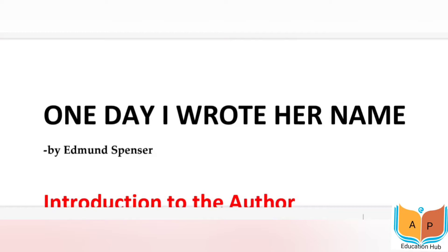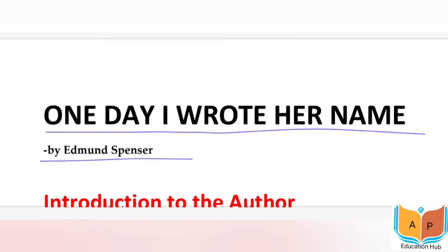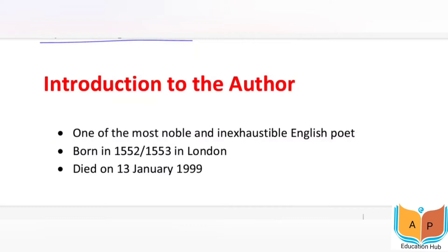Hey guys, once again welcome back to my channel AP Education Hub. Today in this video we'll discuss Amoretti Sonnet 75, named 'One Day I Wrote Her Name.' This Amoretti is written by Edmund Spencer. First we'll discuss the introduction to Edmund Spencer, then the introduction to Amoretti, and after that we'll see the line-wise explanation of Sonnet 75. So without any delay, let's begin.